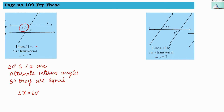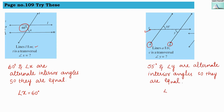Now line A and B both are parallel to each other. C is a transversal. What will be the measure of angle Y? Here you can see that 55 and Y, they both are interior angles — they are diagonally opposite, so they are again alternate interior angles and that's why their measures will be same. So angle Y equals to 55 degrees.